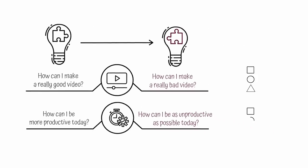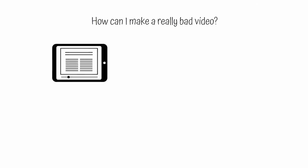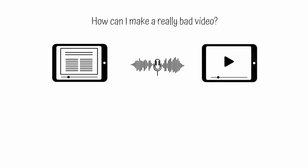Once you've generated a list of ideas, invert them. When I consider how to make a really bad video, I think of using PowerPoint slides with no images or examples. I think of using a monotone voice that will put my audience to sleep, and I think of making the video much longer than it needs to be.